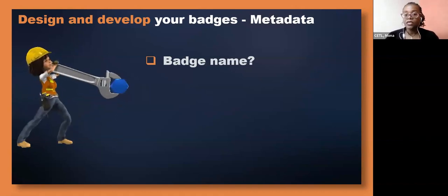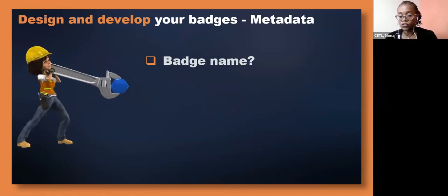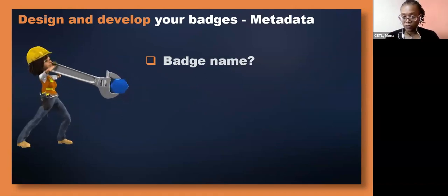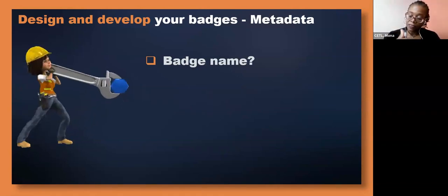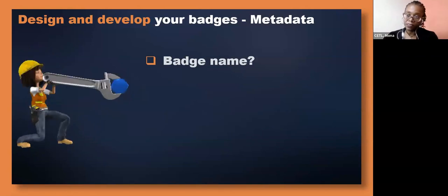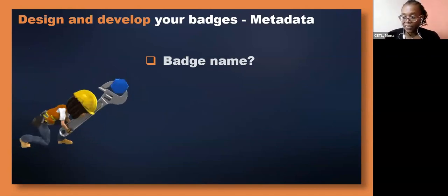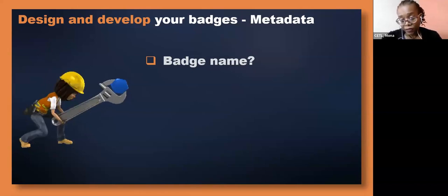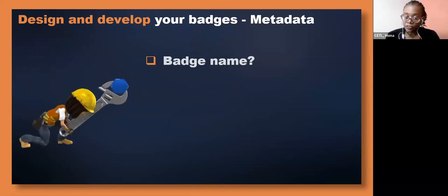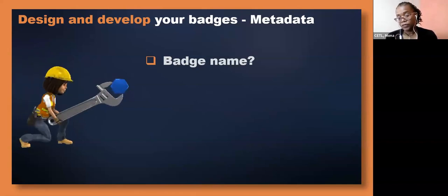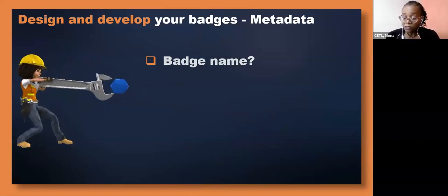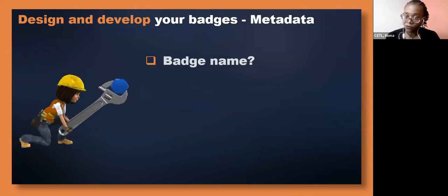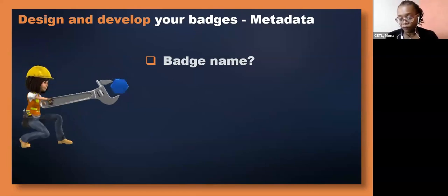Unlike companies that deal with badge development and have meta tags — little codes that when you hover over a badge give you all the information — in our context, where most of us are using the Moodle platform, we need to ensure that the name we come up with is clear. If it's a hierarchical badge, the name needs to indicate whether it's at the beginner, intermediate, or expert level. If it's a badge for a particular skill set or competence, put it in the name. Keep it short, specific, and indicate the level.